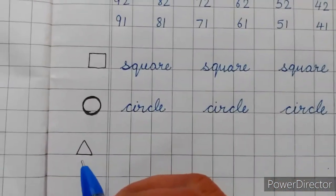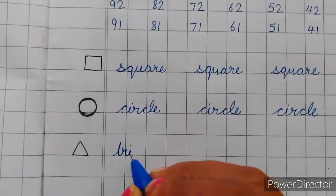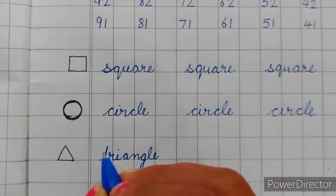Now, this is the triangle. Write and say T, R, I, A, N, G, L, E. Triangle.